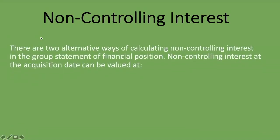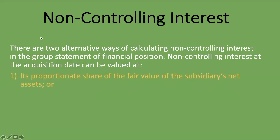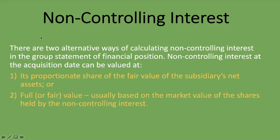With non-controlling interest, there are two alternative ways of calculating it in the group statement of financial position. Non-controlling interest at the acquisition date can be valued at its proportionate share of the fair value of the subsidiary's net assets, or at full fair value, usually based on the market value of the shares held by the non-controlling interest. The example we're going to look at uses the proportionate share of the fair value of the subsidiary's net assets, and we're also doing another one based on fair value — you'll find the link in the description below.